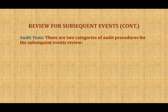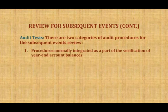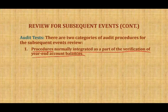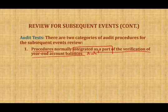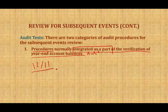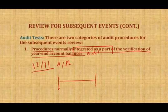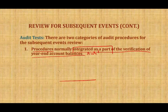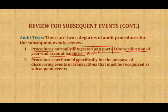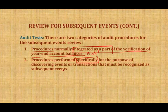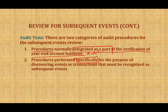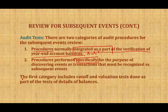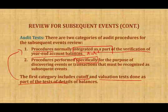There are two categories of audit procedures for subsequent events review. The first category consists of procedures normally integrated as part of the verification of year-end account balances — this is part of the cutoff and valuation testing. For example, if we have receivables at December 31st, we look to see if they were collected in January. This is normal audit work. The second category consists of procedures performed specifically to discover events or transactions that must be recognized as subsequent events — cutoff and valuation tests done as part of the audit test of balances.